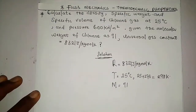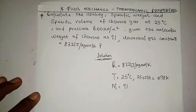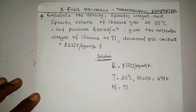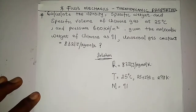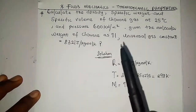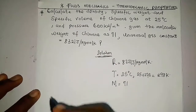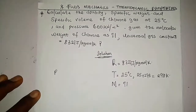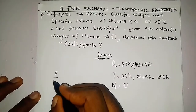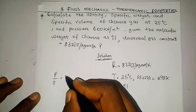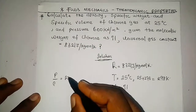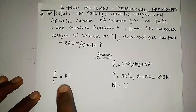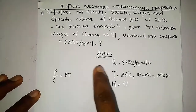Those are all the parameters given in the question. Now the thermodynamic relationship between absolute pressure, specific volume, and density can be written as: pressure divided by density equals the specific gas constant times temperature. Note that this uses the specific gas constant, not the universal gas constant.